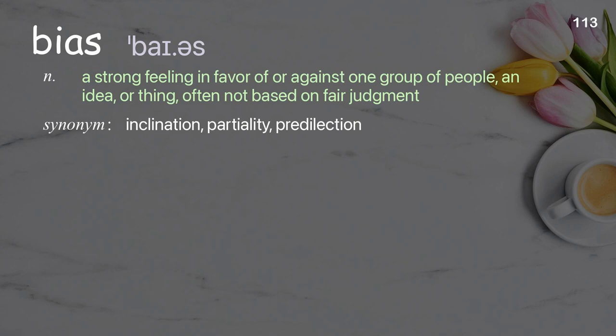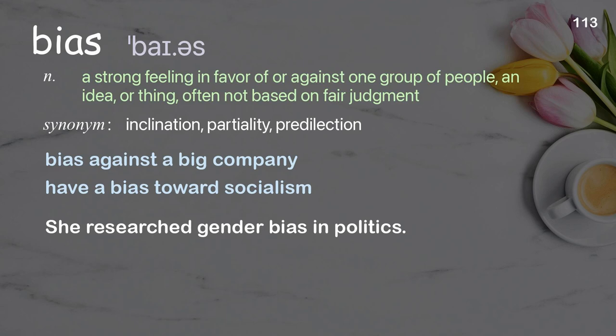Bias: a strong feeling in favor of or against one group of people, an idea, or thing, often not based on fair judgment. Examples: bias against a big company, have a bias towards socialism. She researched gender bias in politics.